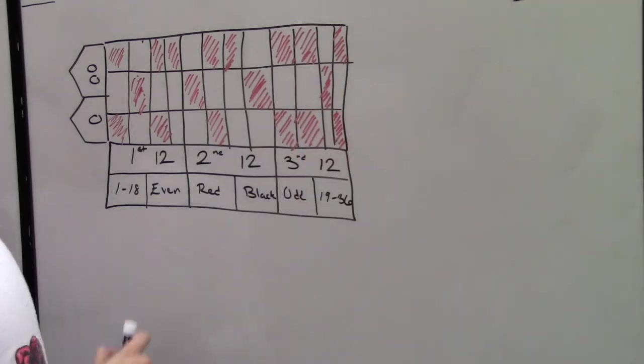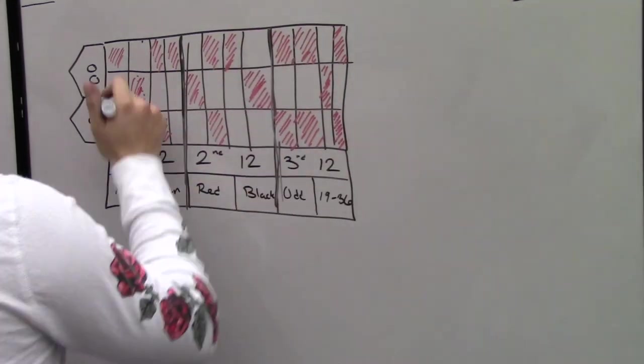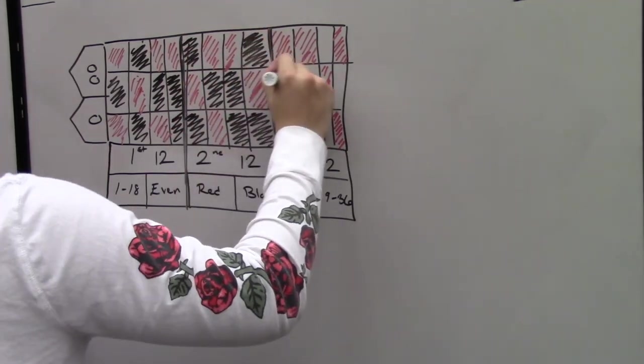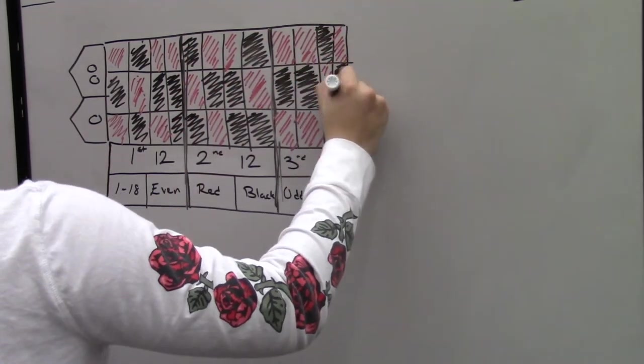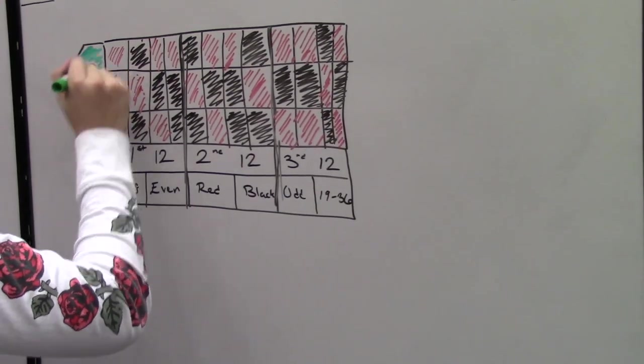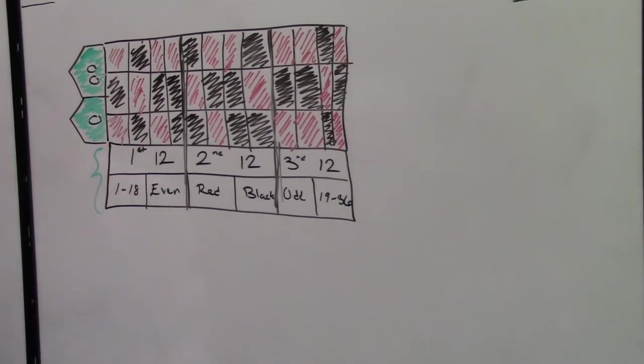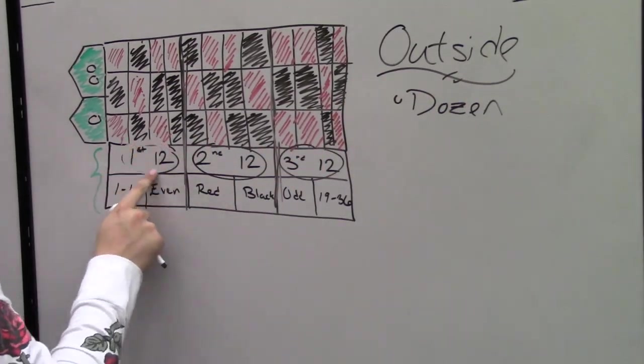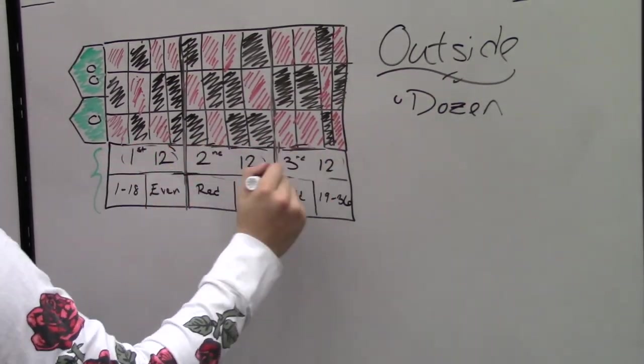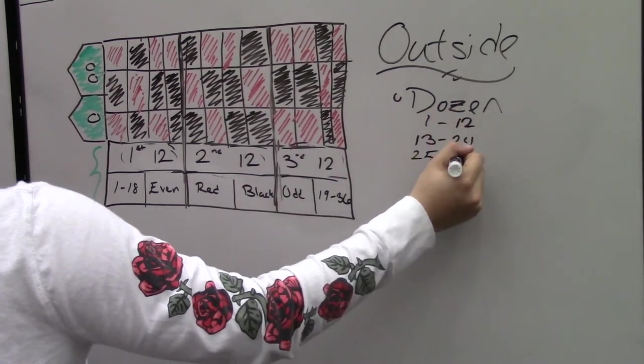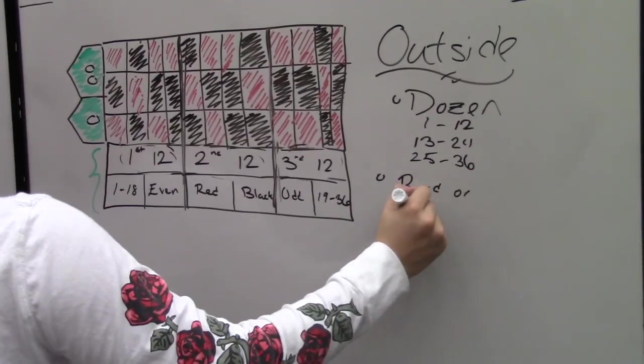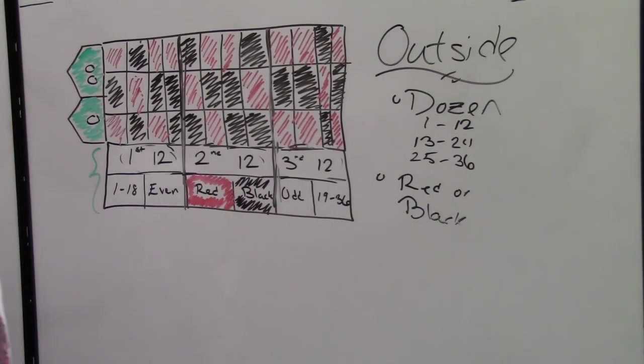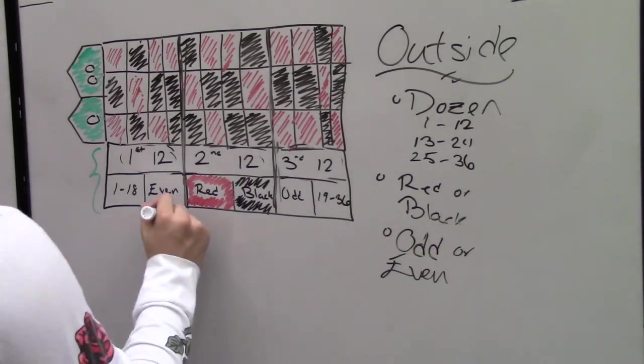There is a red or black bet, which is betting on if the number is red or black. This type of bet has a payoff of 1 to 1. There is also an odd or even bet, which is betting on if the number is odd or even. This bet has a payoff of 1 to 1. A small or large bet is a bet on numbers on 1 through 18 or 19 to 36. This bet has a payoff of 1 to 1. There is usually a minimum on outside bets.